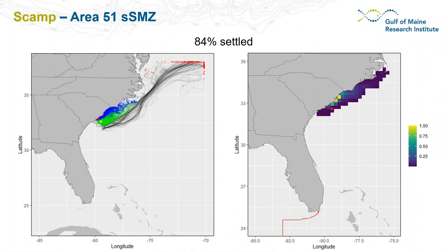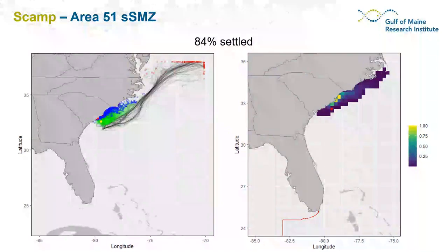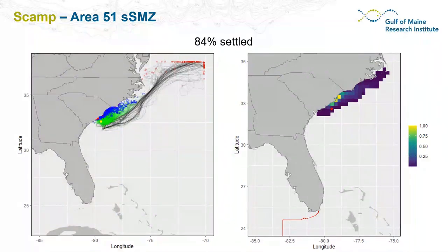On results maps, a yellow dot represents the spawning SMZ releasing particles. Green lines show trajectories of larvae that successfully found settlement habitat, with endpoints shown as blue dots. Black lines show larvae swept offshore or failing to find suitable settlement habitat within the window, with endpoints as red dots. The right panel shows the spatial distribution of successfully settled larvae relative to the maximum, with yellow grid locations indicating where the most larvae settled.